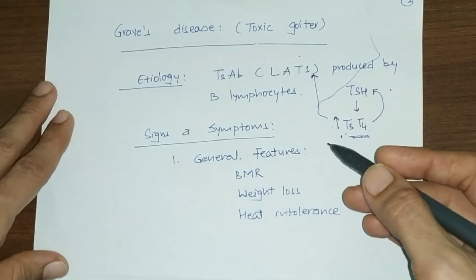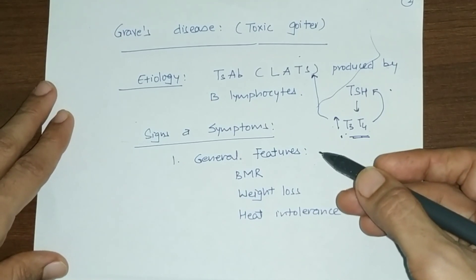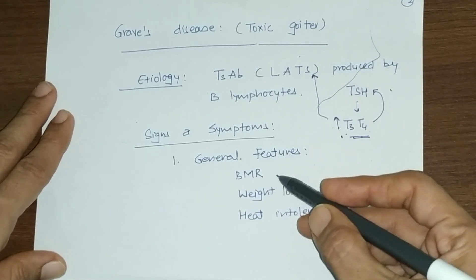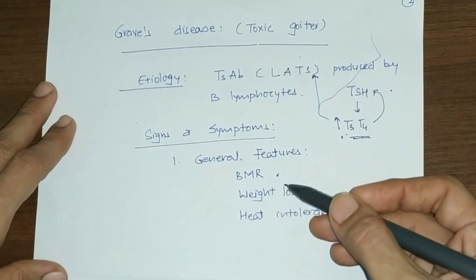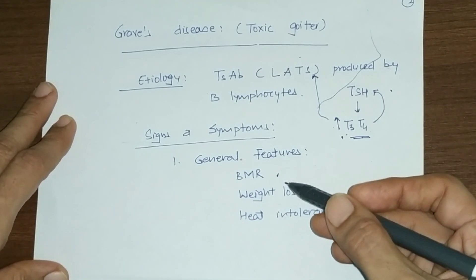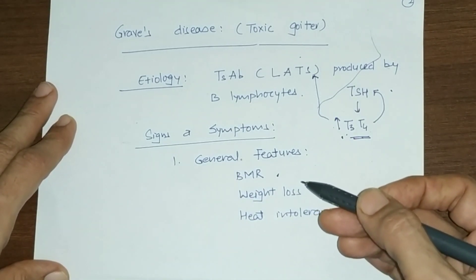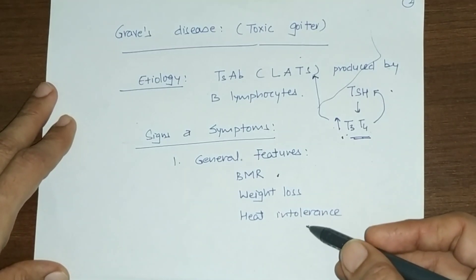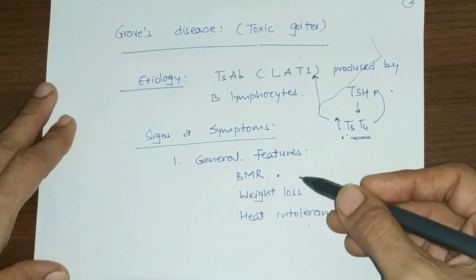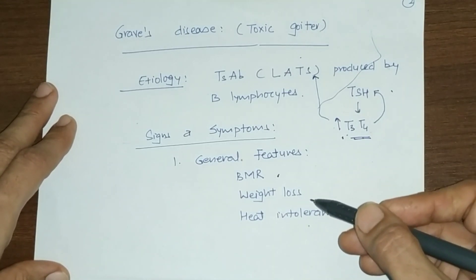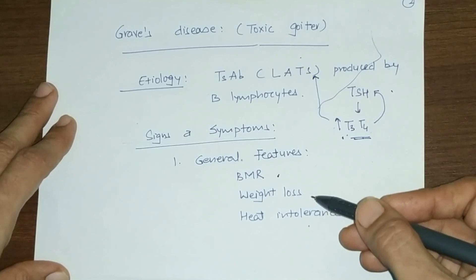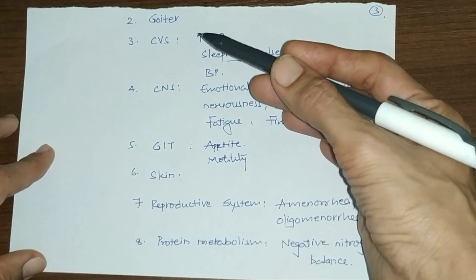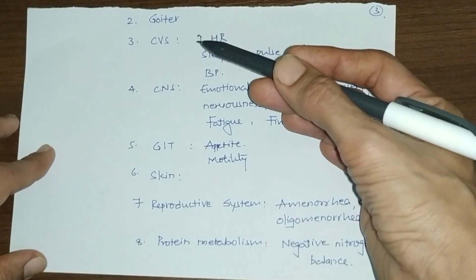Signs and symptoms of Graves disease — general features include a marked increase in basal metabolic rate. As basal metabolic rate increases, heat production increases and the person experiences heat intolerance. Along with increased basal metabolic rate, there is increased appetite, yet despite this the person experiences weight loss.